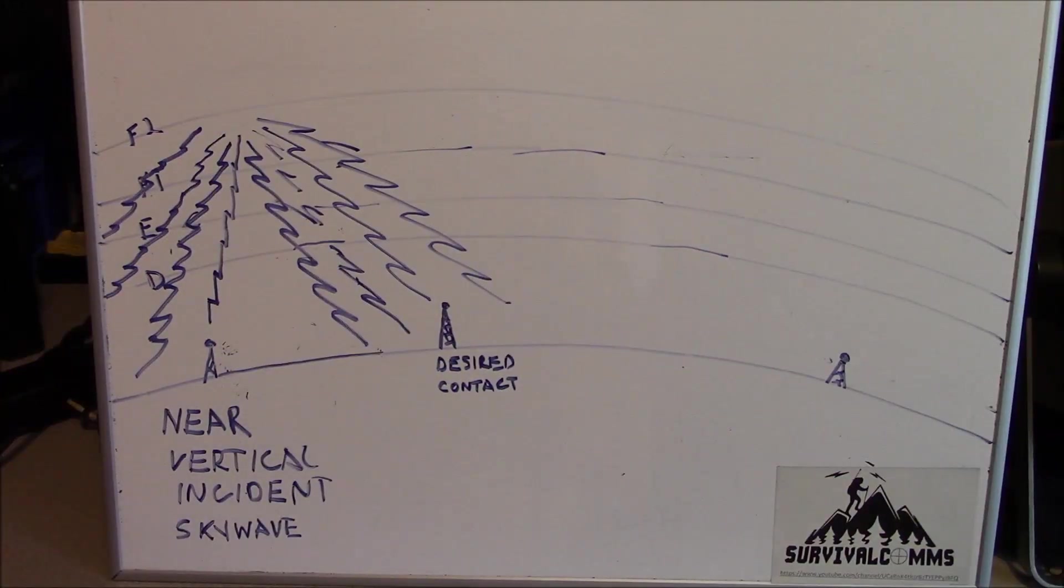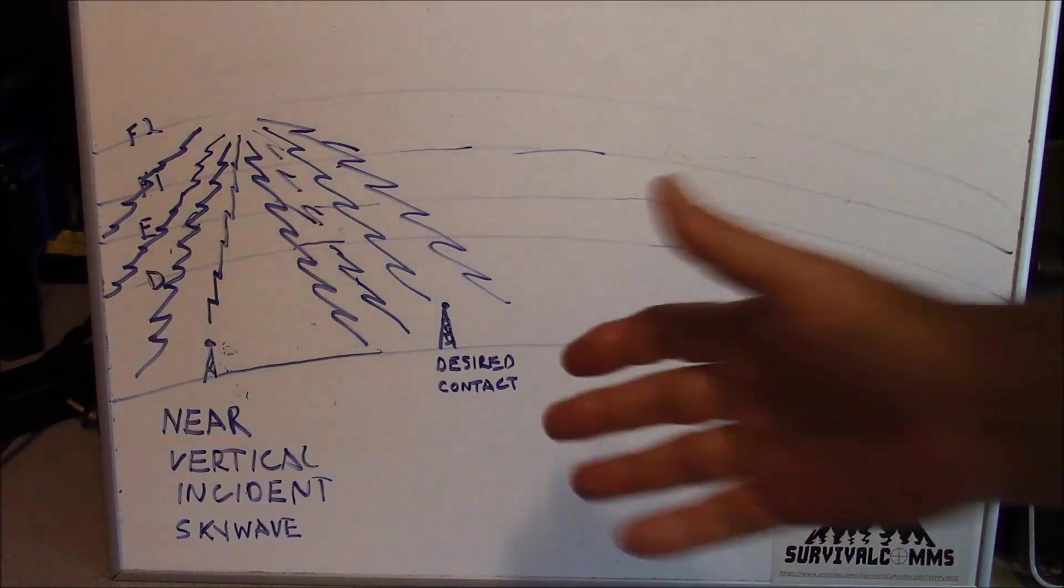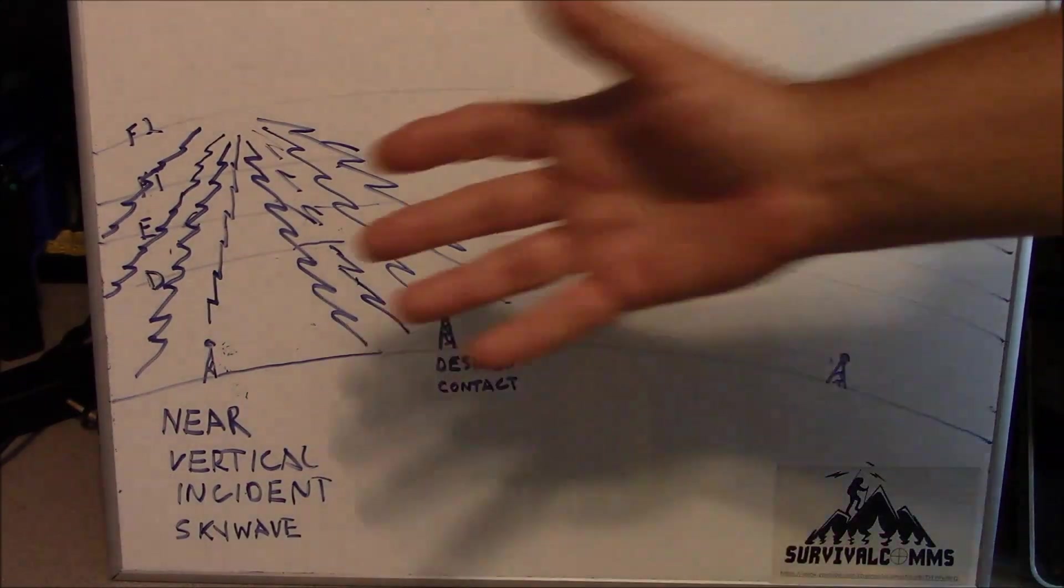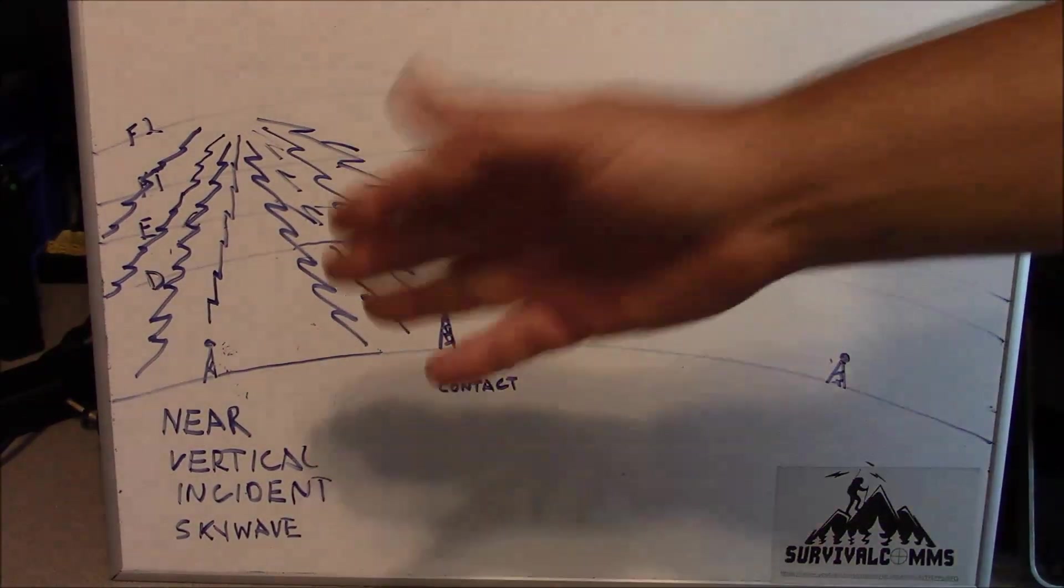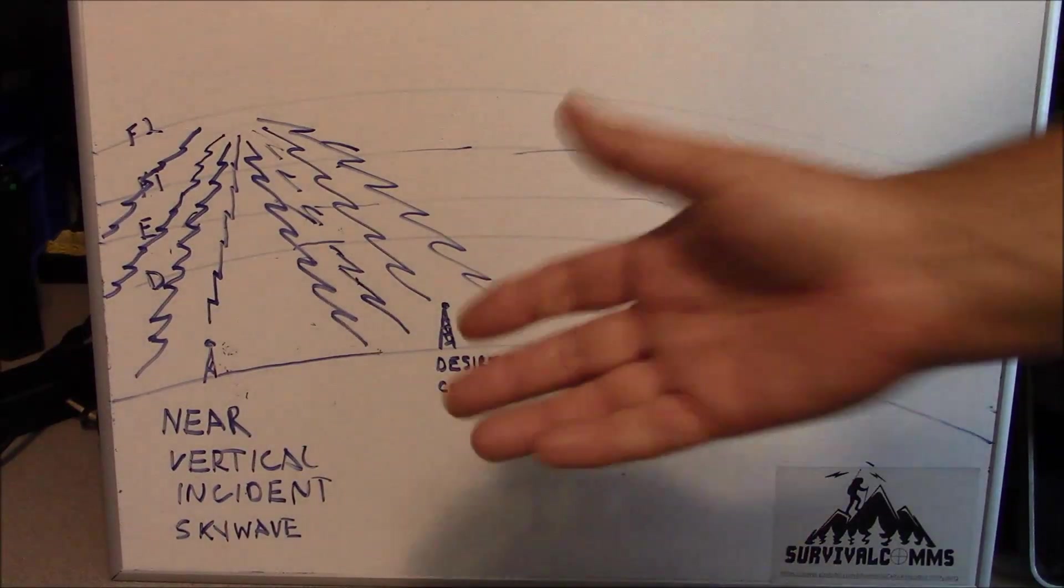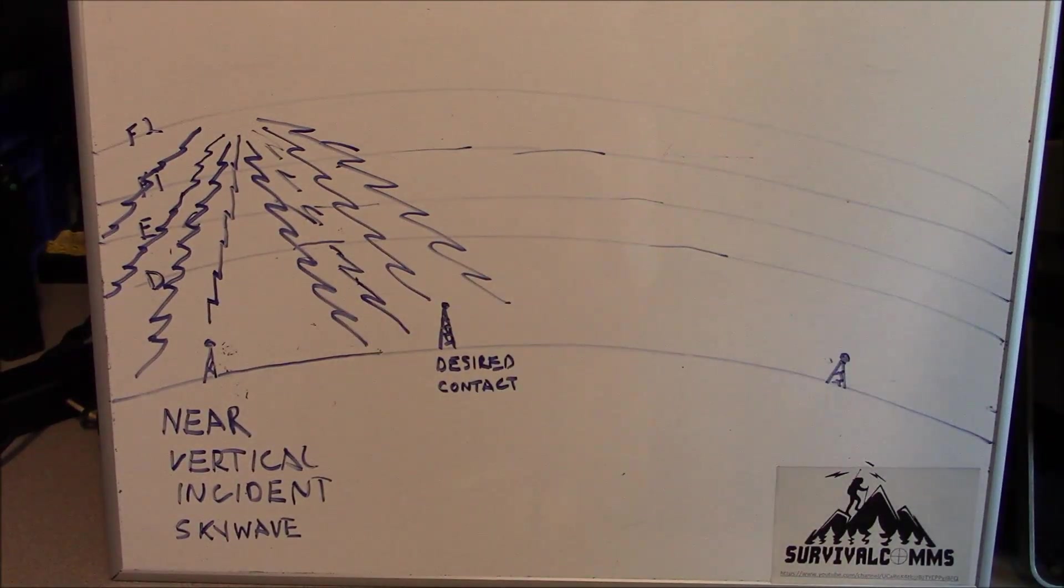One way we could enhance our ability to communicate with this desired station that's too close for sky wave and in our sky wave skip zone is by the use of an antenna configured as a near vertical incident sky wave antenna. It's important to remember that for this to be most effective, you need to have this other desired station also needs to have an antenna that's configured for the NVIS operation.